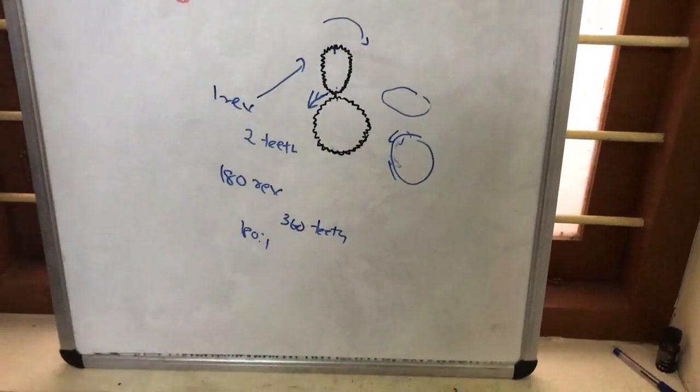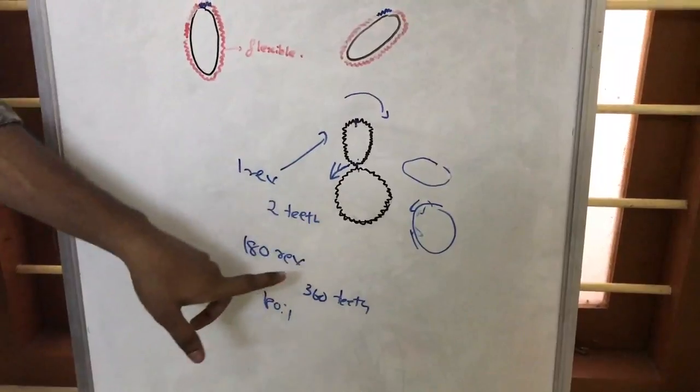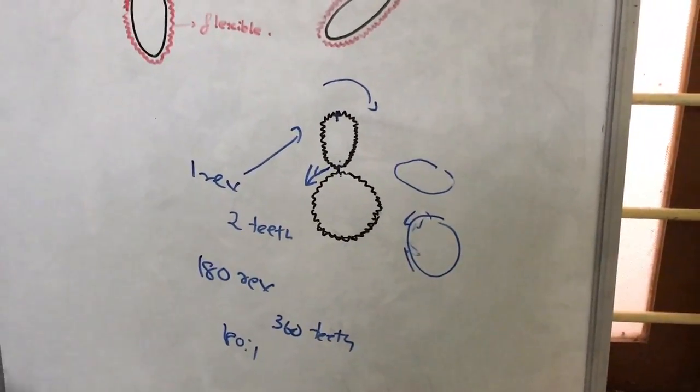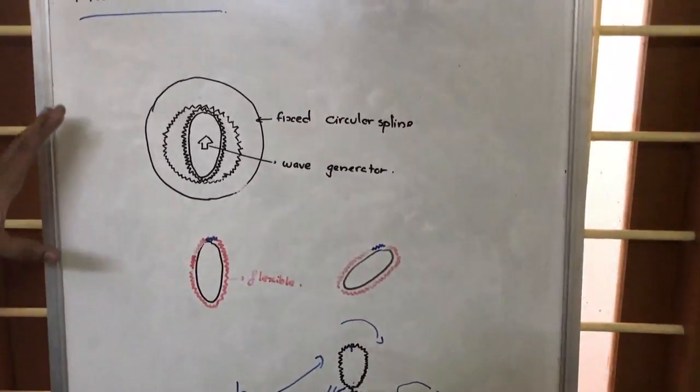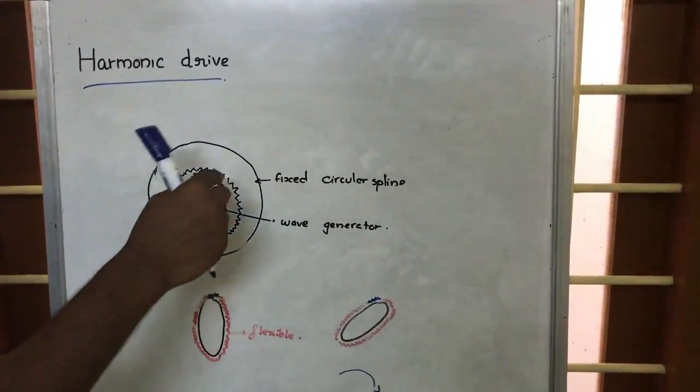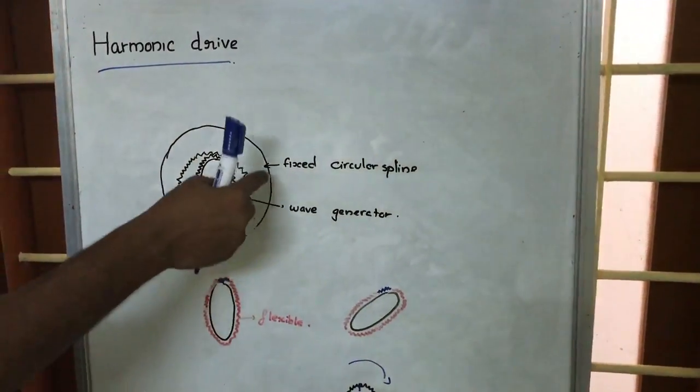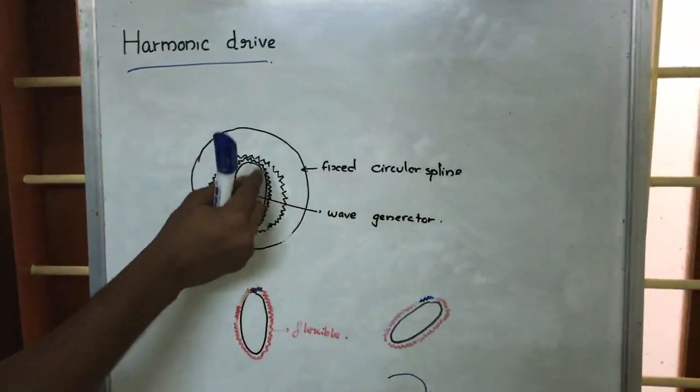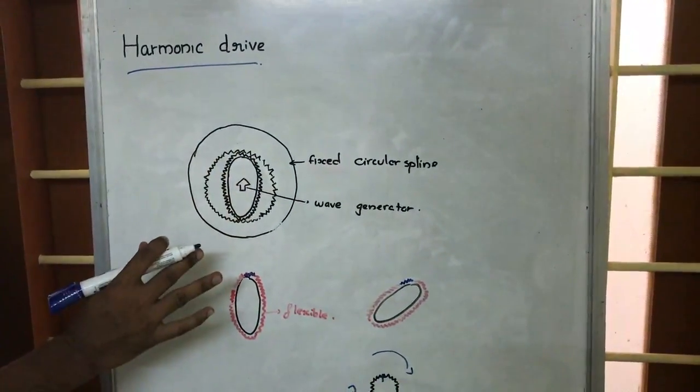So this is how we use this one. Here what we do is we are having a fixed circular spline—that means this particular region is fixed up. Then this is an elliptical region...